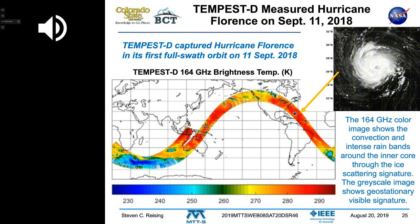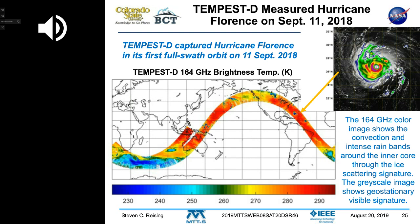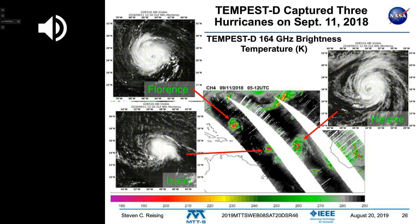We measured not only Hurricane Florence, but two other hurricanes — Isaac and Helene — shown in orbital scans at 164 GHz brightness temperature in color insets, with grayscale visible imagery from geostationary satellites shown as context.